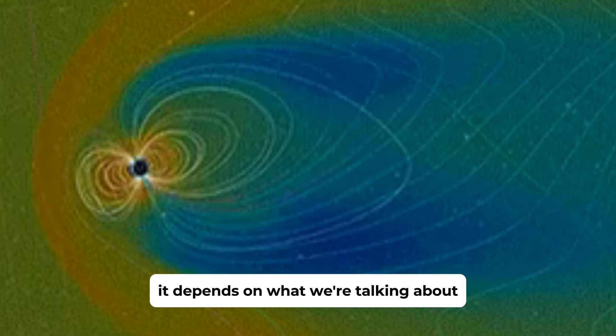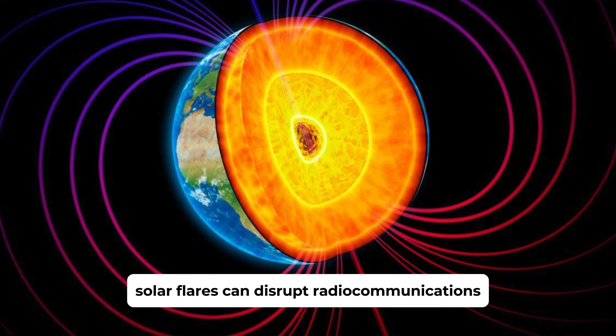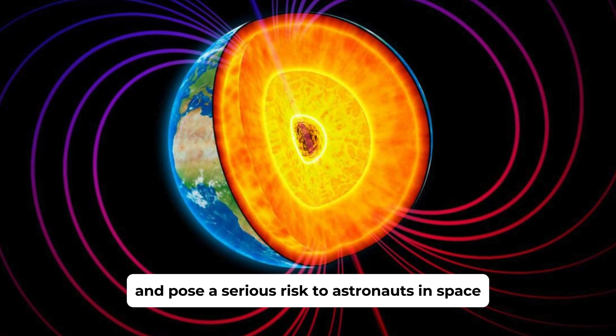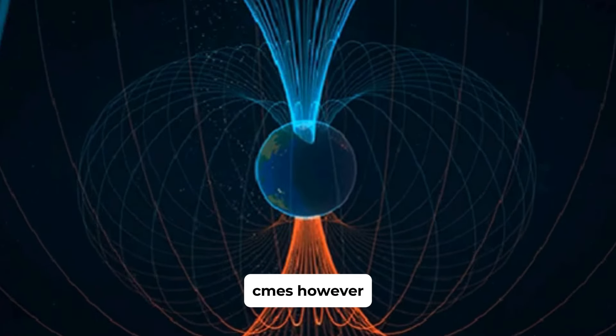When it comes to danger, it depends on what we're talking about. Solar flares can disrupt radio communications, navigation signals, and pose a serious risk to astronauts in space due to the intense radiation.